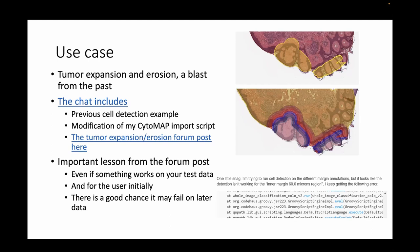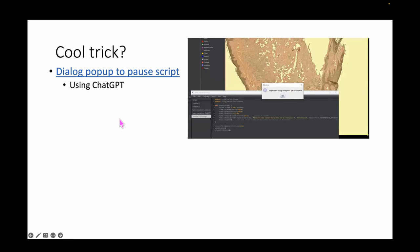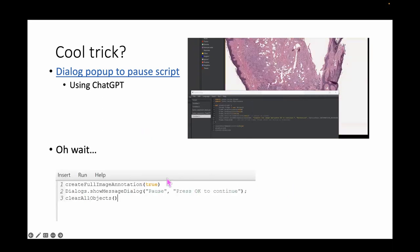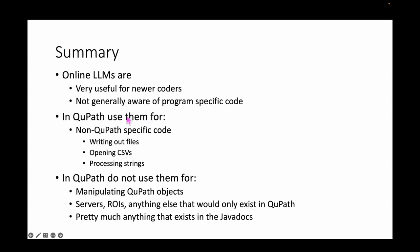So ChatGPT can modify QPath code that you've written and improve your coding practices, but it doesn't really know the QPath functions — if you try to make it use QPath functions it will just make something up. Another example: I was expanding annotations and wanted a step-by-step dialog pop-up, and you can see how much code ChatGPT needed to create that little pop-up — whereas Pete already has a one-line script that does that, and ChatGPT didn't know about it. Summary: online LLMs are useful for non-QPath-specific code like writing functions to open CSV files, process strings, or generate regular expressions, but not for QPath-specific work.